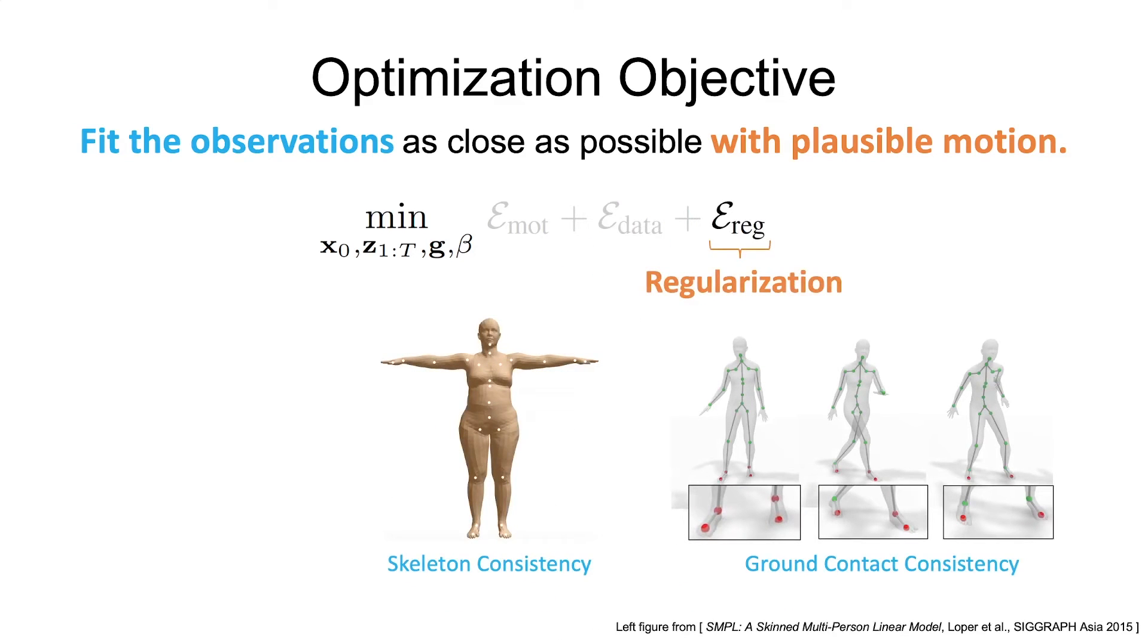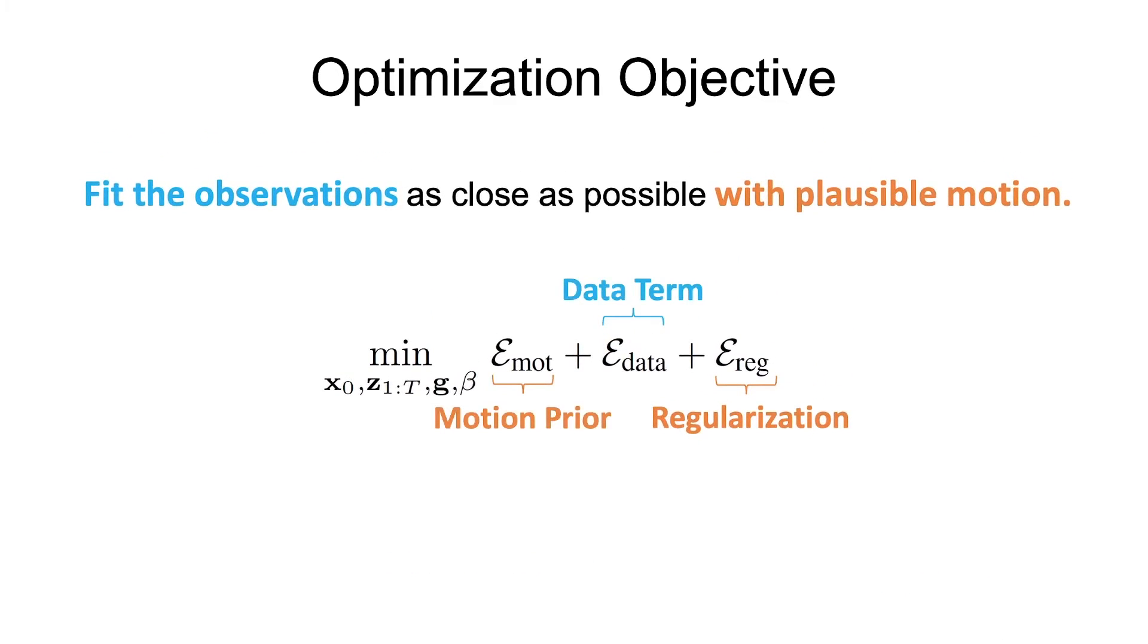Finally, additional regularization terms promote plausibility early in optimization. These include both skeleton and ground contact consistency losses. Together, these objectives enable robust recovery of motion even when observations are partial and noisy.